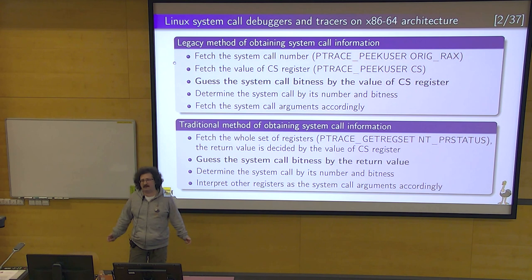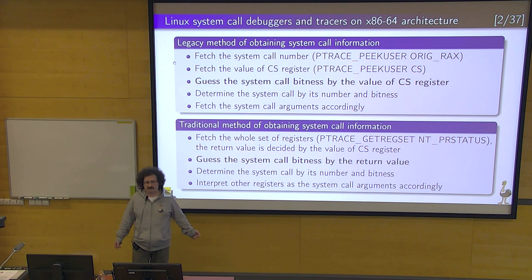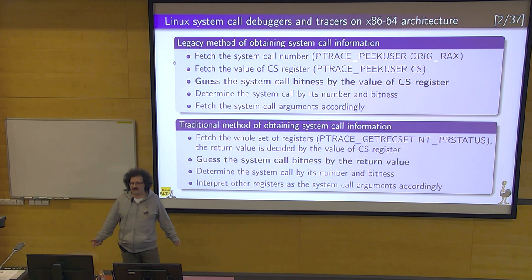But there was no API to tell exactly what the system call was — whether it was a 64-bit or 32-bit call. So what could user space tracers and debuggers do when they needed to obtain system call information? They fetched the number from one register, fetched the value of the CS register to find out the bitness of the process, and they did a wild guess: if the process is 64-bit, then the syscall also has to be 64-bit. Quite natural, right?